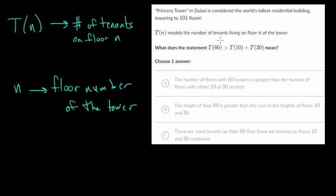So if we see something like T of 60, let me write that down. Essentially we're replacing the N value with 60 here. So this is when N is 60. And when the N value is 60, that just tells us a floor number. So we're on the 60th floor. And T is just the number of tenants on that floor.